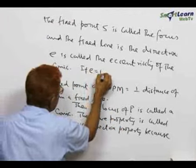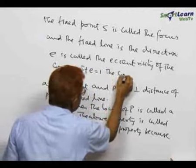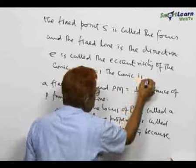If E is equal to 1, the conic is a parabola.